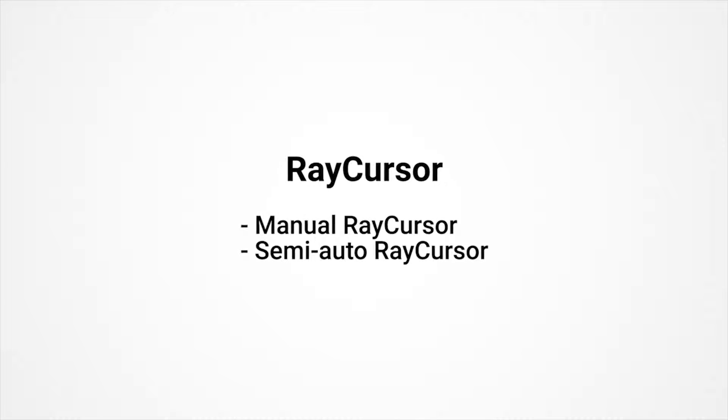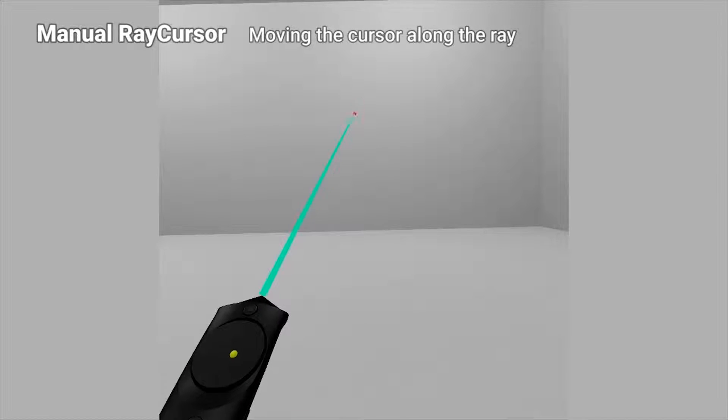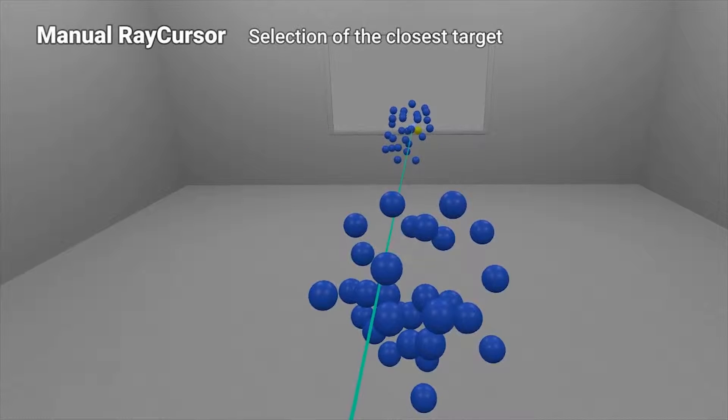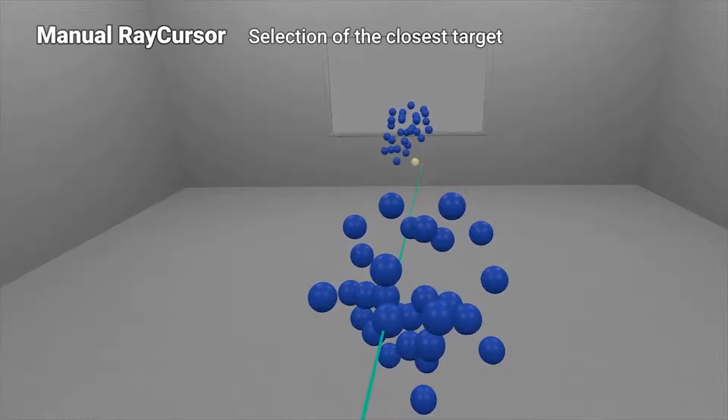We describe the design of RayCursor. First, we add a cursor on the ray that the user can manipulate. Then we add a strategy consisting of selecting the closest target to the cursor. This is the manual version of RayCursor.